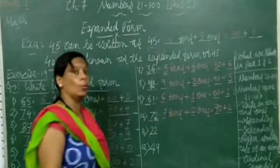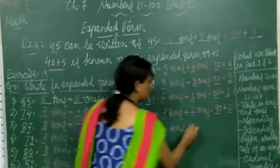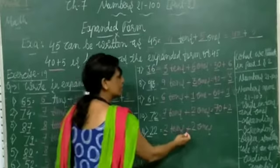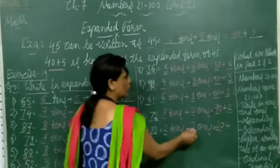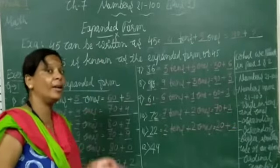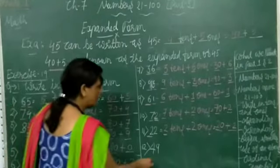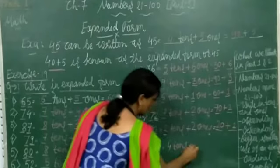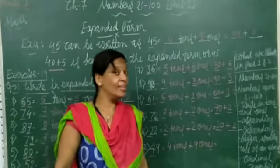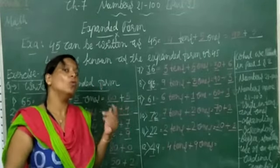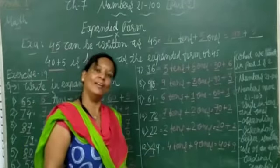Now next: 22. In 22, how many 10s? 2 10s. And how many 1s? 2 1s. So 2 10s plus 2 1s — 2 10s equals 20, so write 20 plus 2 1s, which is 20 plus 2. So 20 plus 2 is the expanded form of 22. Now 49 — in 49, how many 10s? 4 10s. How many 1s? 9 1s. So 4 10s equals 40 — 40 plus 9 is the expanded form of 49.